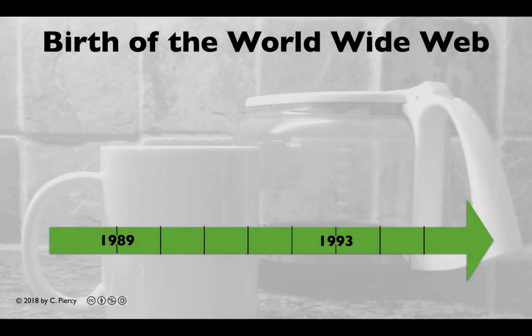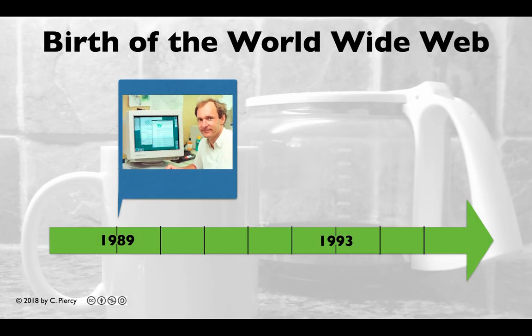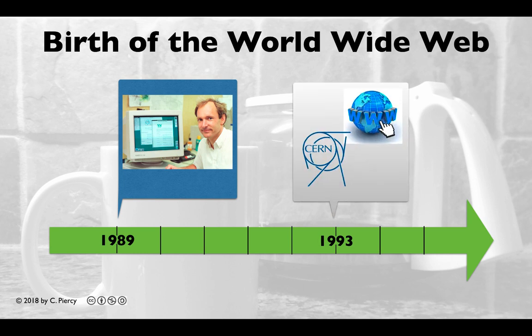Tim Berners-Lee, a British scientist at CERN, the European Organization for Nuclear Research, invented the World Wide Web in 1989. He created the web to support better information sharing between scientists around the world. On April 30, 1993, CERN put the World Wide Web software in the public domain. CERN made the next release available with an open license, and the rest is history. And now we can build our own web applications.